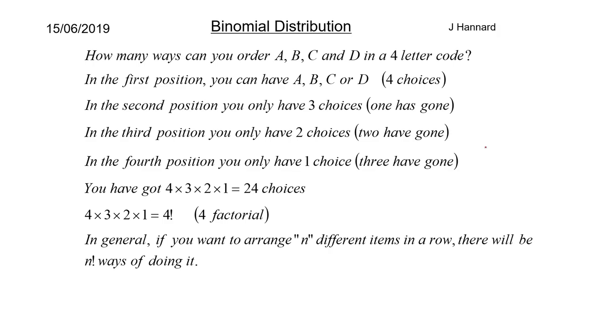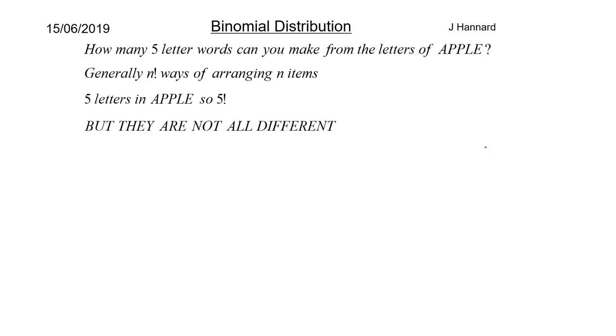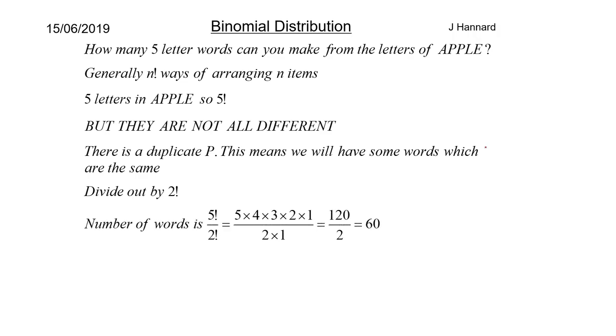In general if you want to arrange n different items in a row there will be n factorial ways of doing it. So how many five letter words can you make from the letters of Apple? Generally n factorial ways of arranging n items. Five letters in Apple so five factorial but they are not all different. There is a duplicate P. This means we'll have some words which are the same. So divide out by two factorial because you've got two replications. The number of words is five factorial over two factorial which is 120 over two which is 60.